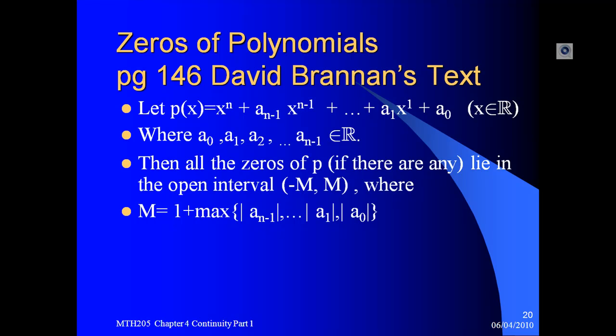Then, the location of the zeros of P, if there are any, lies in the open interval from minus M to M. Where M here, M is 1 plus maximum of the absolute value of all the a₀, a₁, to aₙ₋₁.